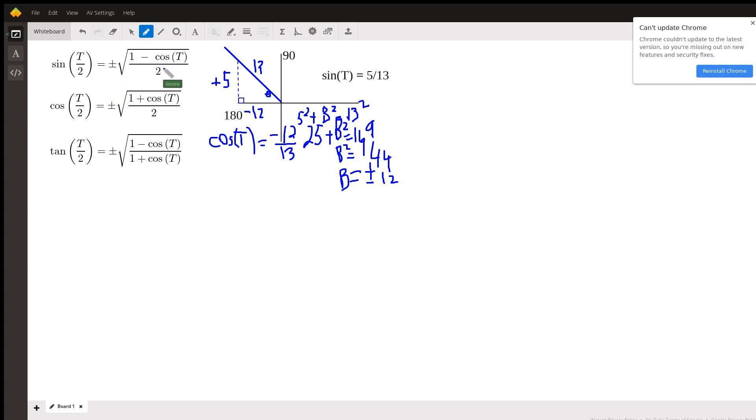This sine is going to be 1 minus, and instead of the cosine of theta, we put in negative 12 over 13. And what else do we need? I think the tangent. And so we'll go 1 minus the cosine. This is negative 12 over 13.